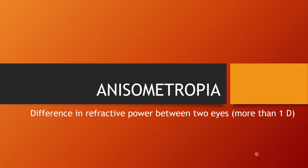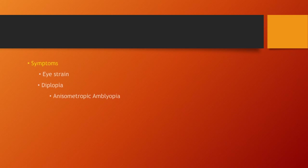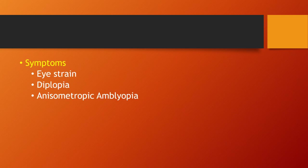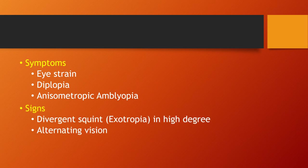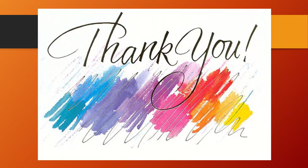Anisometropia is a difference in refractive power between the two eyes; if it is more than one diopter it may lead to aniseikonia — different image sizes on the two retinas. Aniseikonia depends on the degree of refractive anomaly and type. Symptoms include eye strain, diplopia, and anisometropic amblyopia; the patient may present with a divergent squint. Diagnosis is made with a red lens test; correction options include spectacle lenses, contact lenses, excimer laser surgery, and implantation of a properly powered IOL in selective cases.